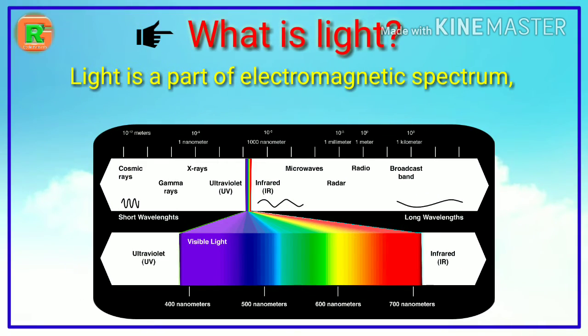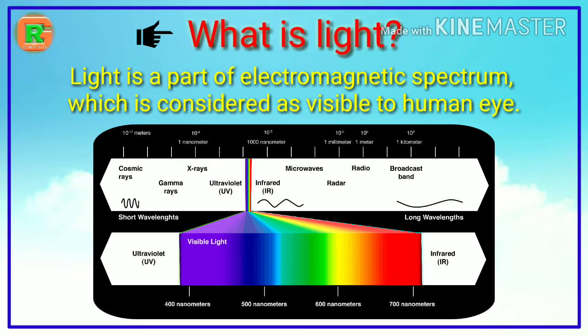What is light? Light is a part of electromagnetic spectrum which is considered as visible to human eye.